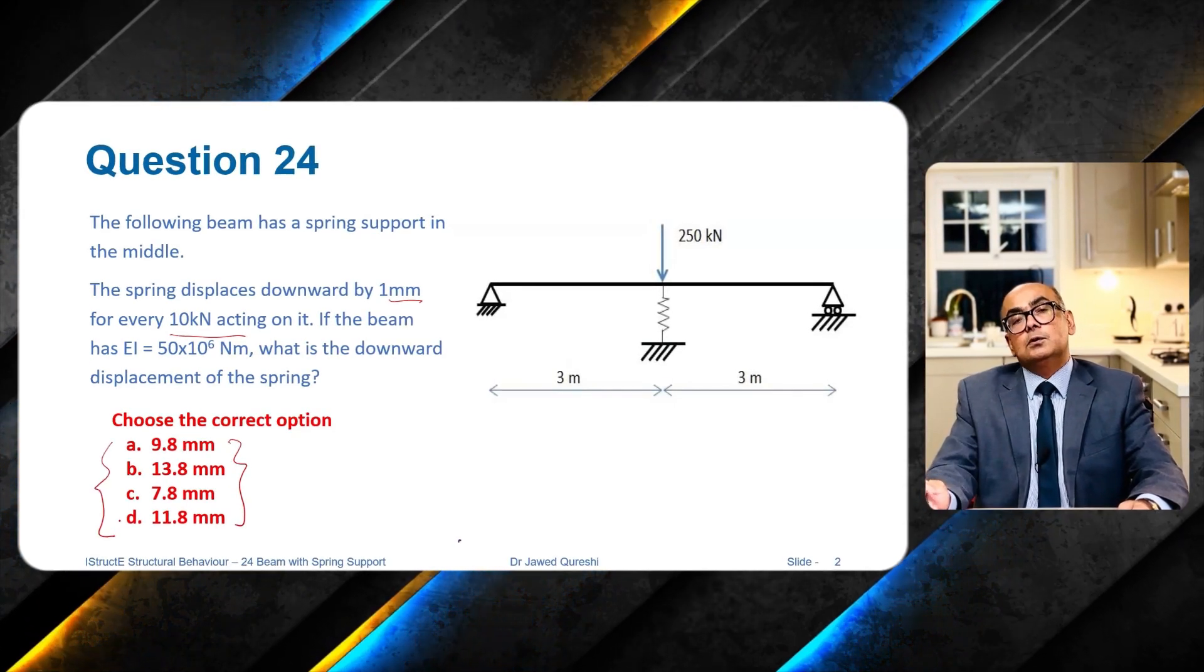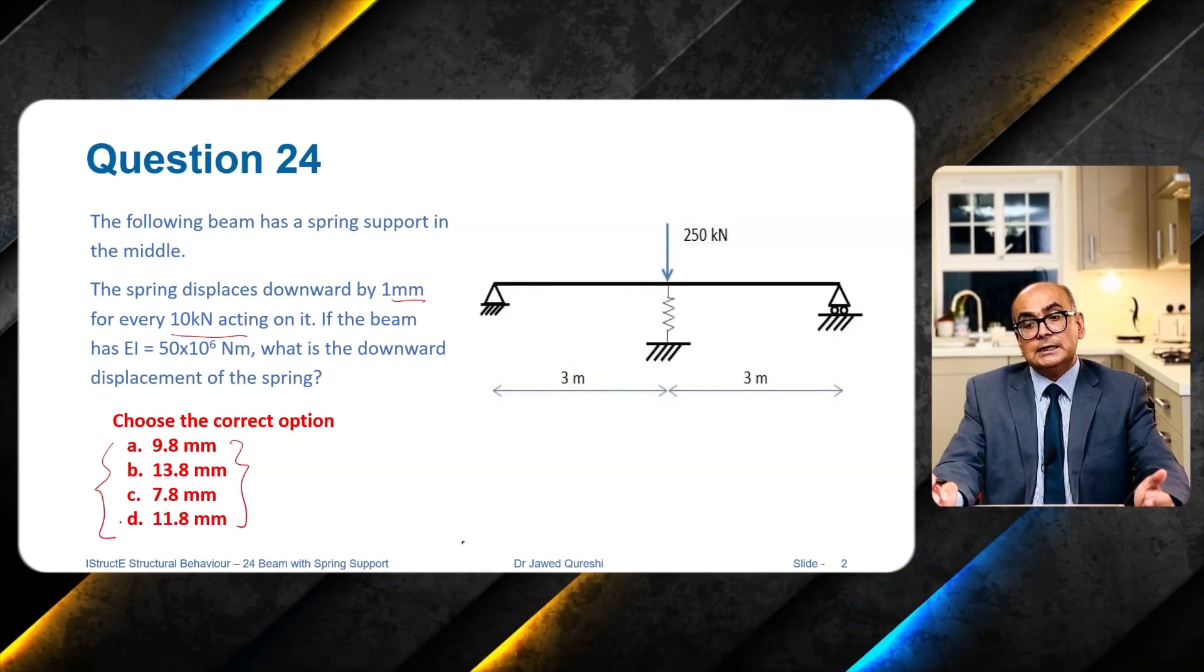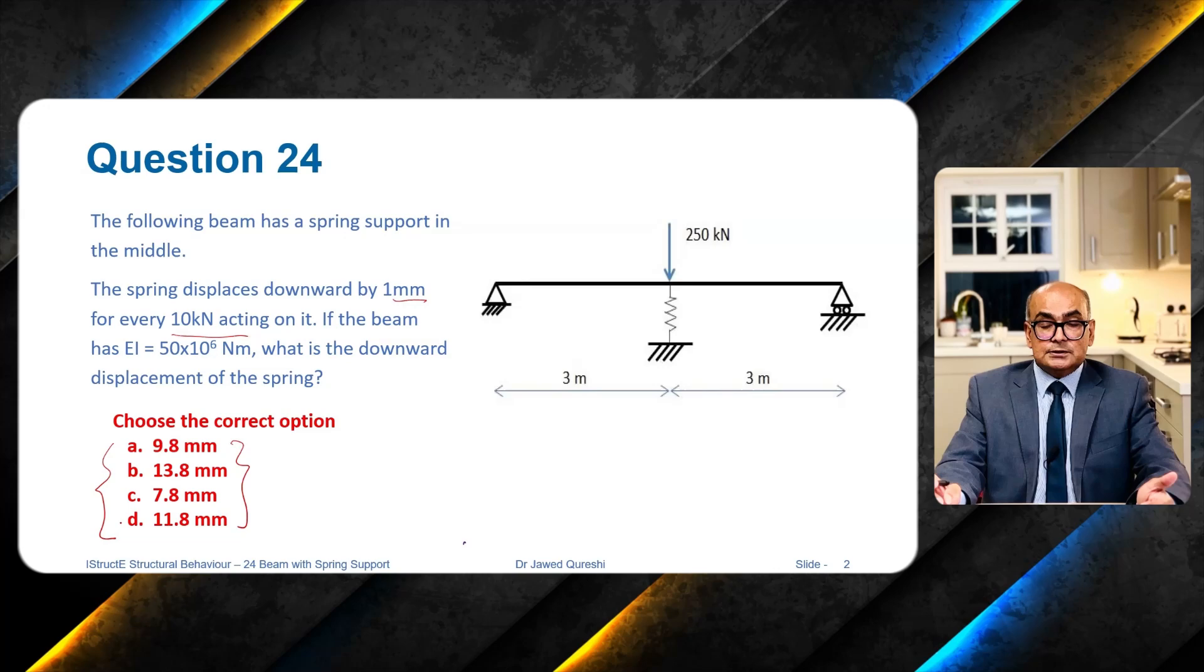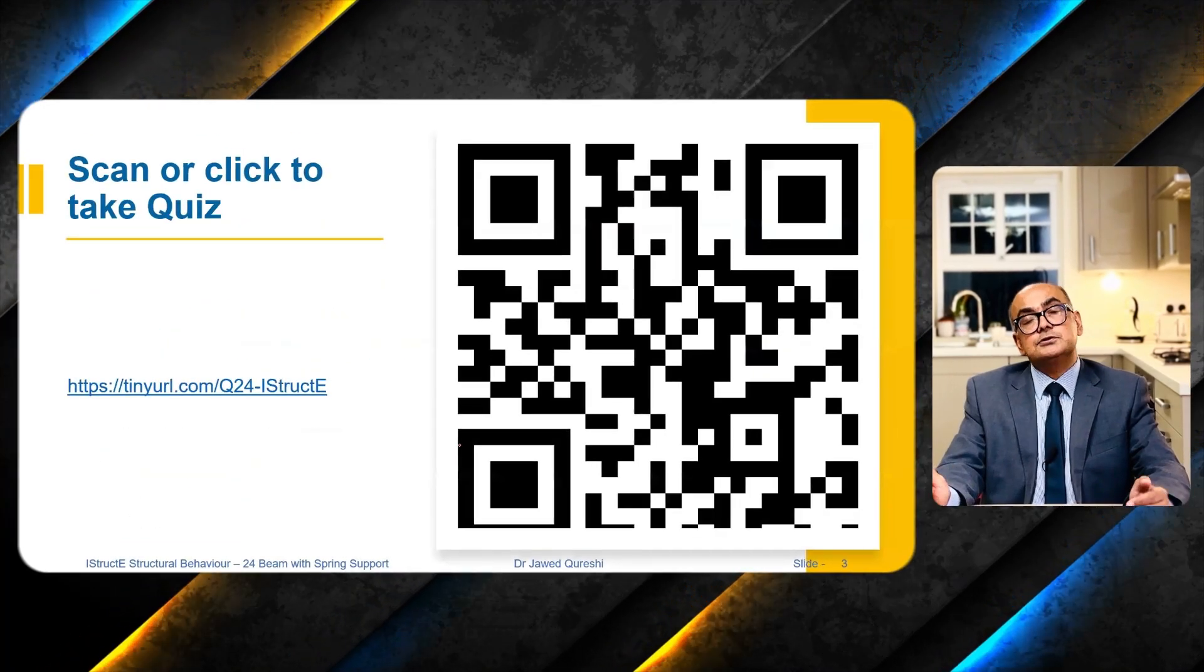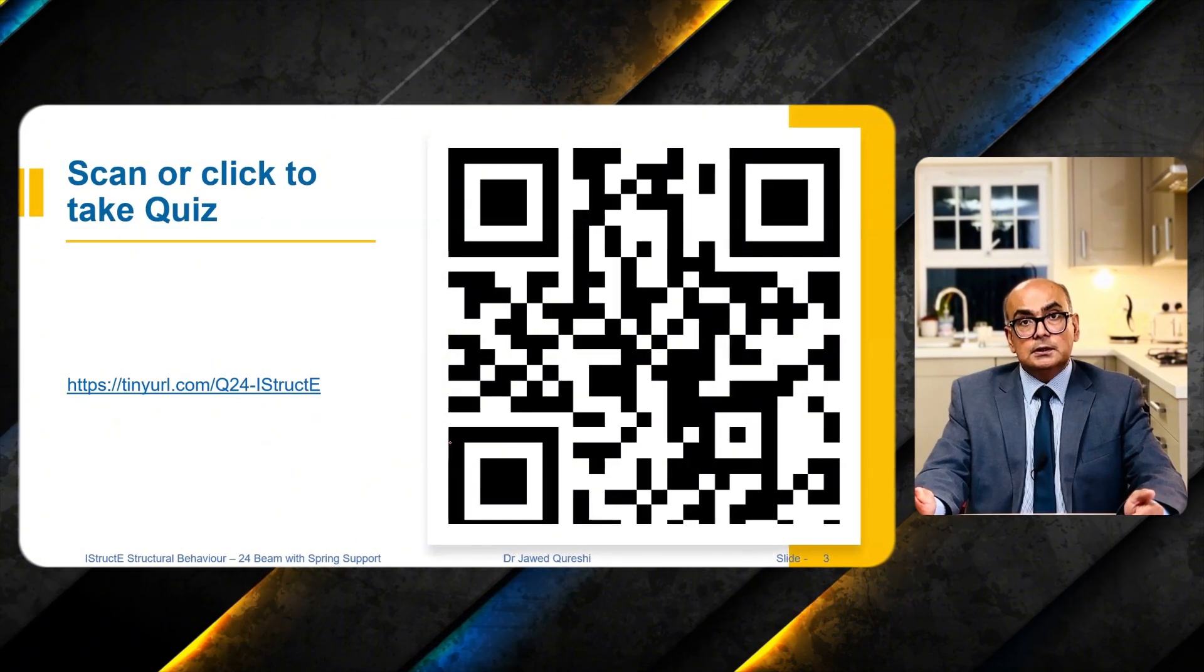What is the downward displacement of this spring? We are given a couple of options and we will see what option we get, but it's not just about the options here—it's about the process. How do we quickly get the deflection of this beam?